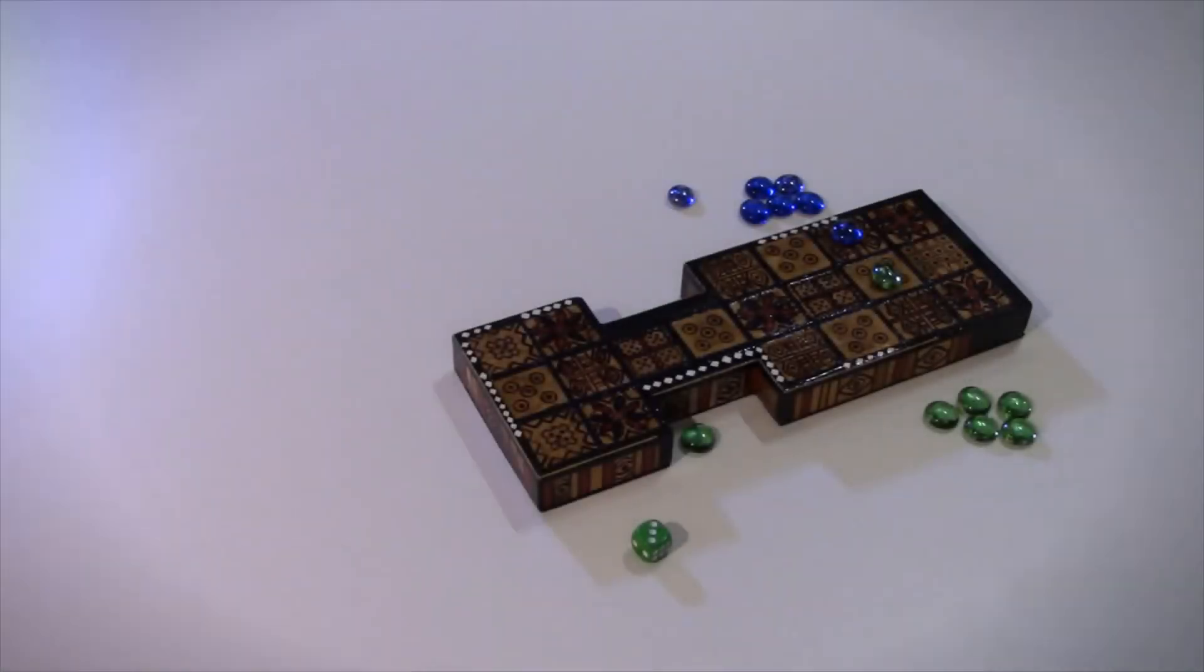If a player rolls a number that allows them to land on the same tile as the other player's game piece, they get to kick their opponent off the board and their game piece has to restart.